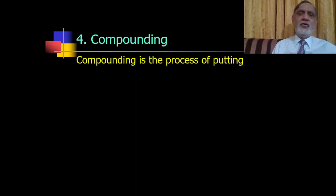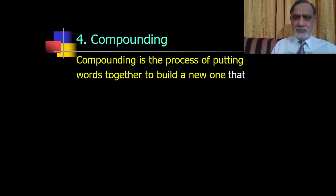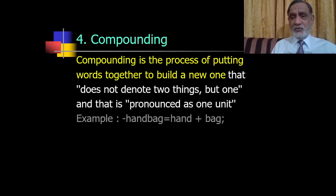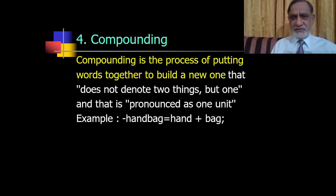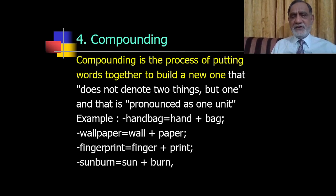The fourth word formation type is compounding — the process of putting two words together to build a new one that does not denote two separate things but one, and is pronounced as one unit. Examples include 'handbag' (hand + bag), 'wallpaper' (wall + paper), 'fingerprint', and 'sunburn' (sun + burn).